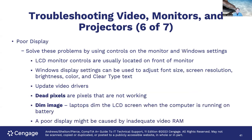For a poor display, use controls on the monitor and Windows settings. LCD monitor controls are usually on the front of the monitor. Windows display settings can adjust font size, screen resolution, brightness, color, and ClearType text. You can also update video drivers. Dead pixels — pixels that aren't working — appear as little black spots in the image. A dim image can occur when a laptop dims the LCD screen on battery power, or due to backlight issues. Poor display may also be caused by inadequate video RAM.